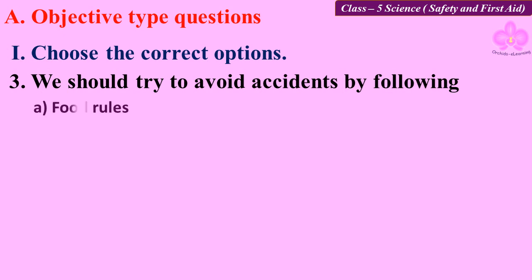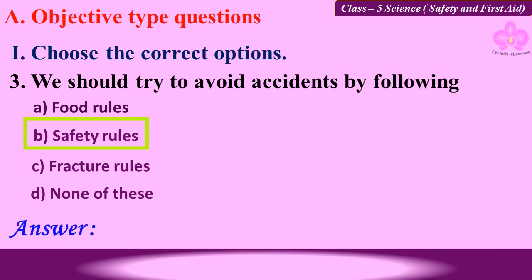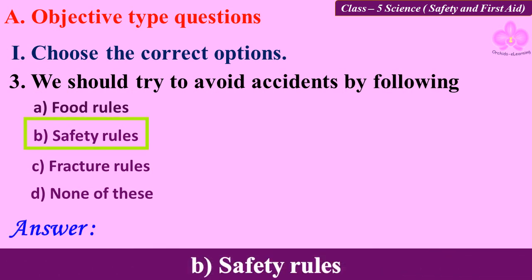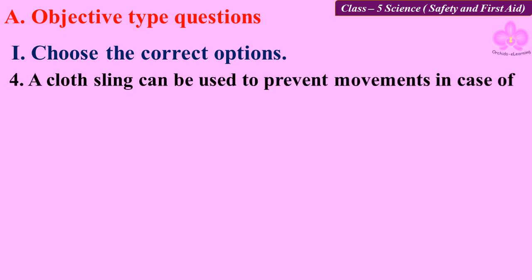Question number three: We should try to avoid accidents by following — A: food rules, B: safety rules, C: fracture rules, D: none of these. Answer: B, safety rules. Fourth question: A cloth sling can be used to prevent movements in case of —